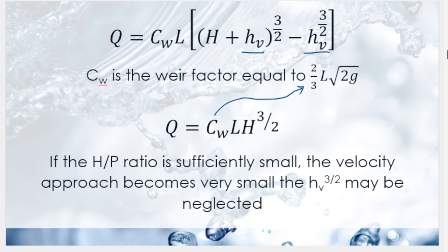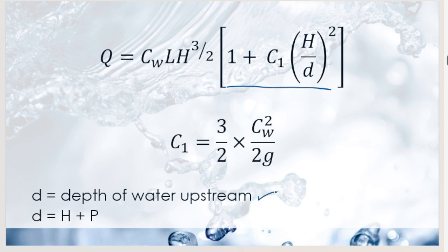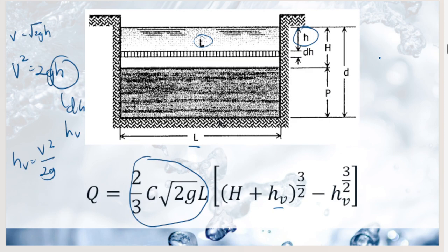The Cipolletti weir is a trapezoidal weir with side slope of 1 horizontal to 4 vertical. This gives θ = 75.96° and α = 14.04°. The side slope adds approximately enough effective width to offset the side contraction. The actual discharge formula is: Q = 1.859·L·H^(3/2) for SI, or Q = 3.37·L·H^(3/2) for English units.